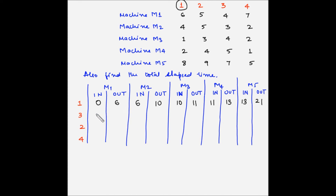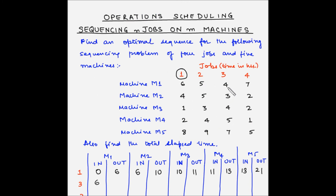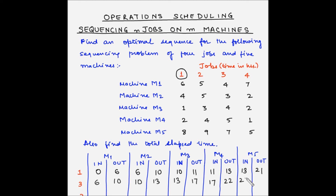Next, job 3 enters M1 at hour 6 and takes 4 hours, so out at hour 10. At hour 10 it goes to M2, takes 3 hours, out at hour 13. Then M3, takes 4 hours, out at hour 17. Then M4, takes 5 hours, out at hour 22. Then M5, takes 7 hours, out at hour 29.